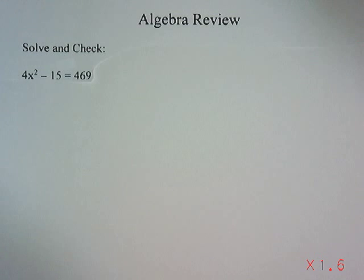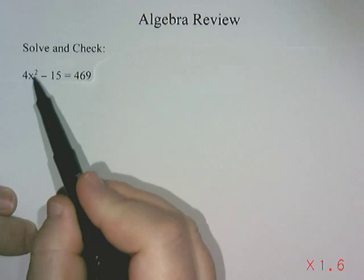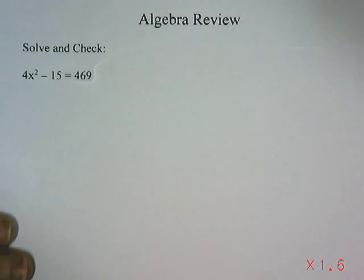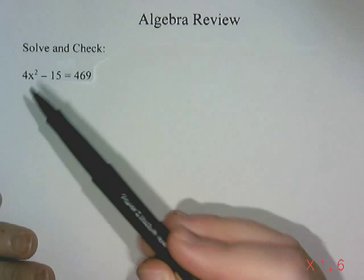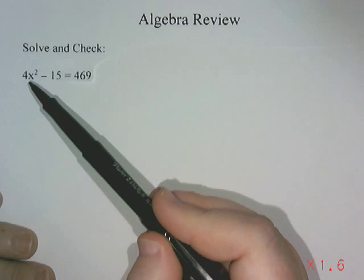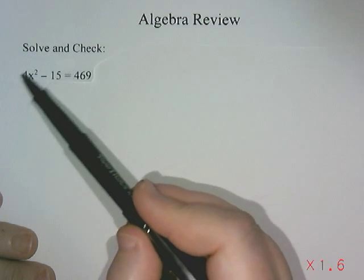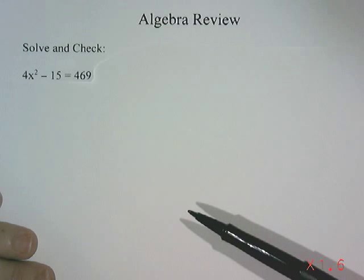Algebra review. Our question says: solve and check 4x squared take away 15 equals 469. When a question asks you to solve, it wants us to figure out what number we could put in place of x that would make the left side of this equation equal 469.